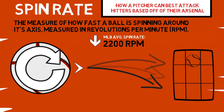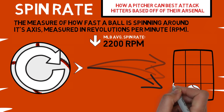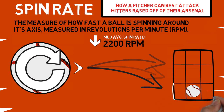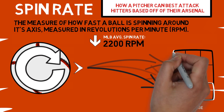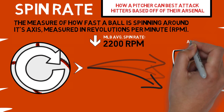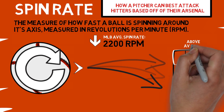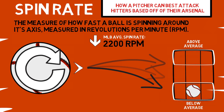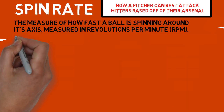Spin rate is not inherently good or bad — it's more like a fingerprint. For a lower than average spin rate pitcher, he should focus on pounding lower in the zone because his pitches are going to drop more than the hitter is used to. Pitchers with above average spin rate should throw up in the zone because their ball drops less than the hitter expects. So that is what average spin rate is for the fastball and how you can use it best.